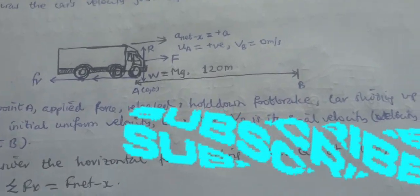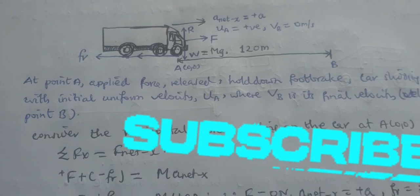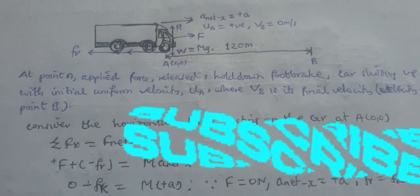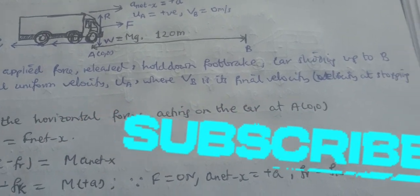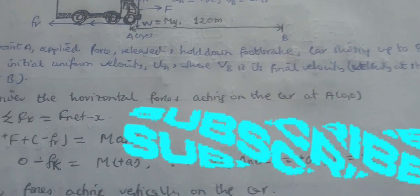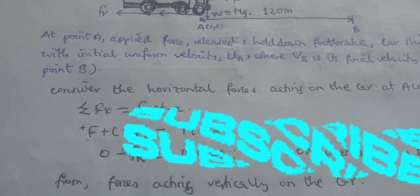The car moves uniformly with initial velocity U until the final velocity at point B equals zero, the point where the car comes to rest.